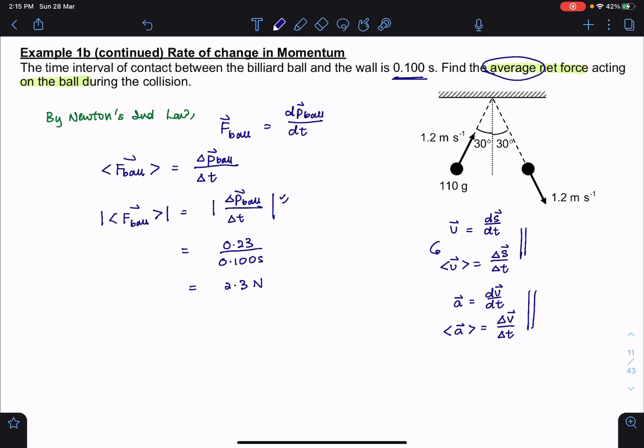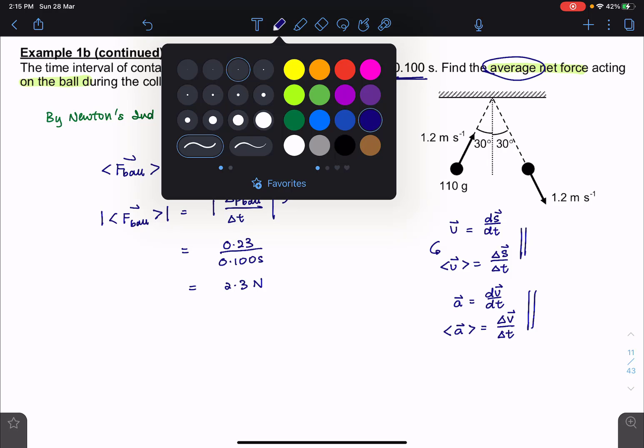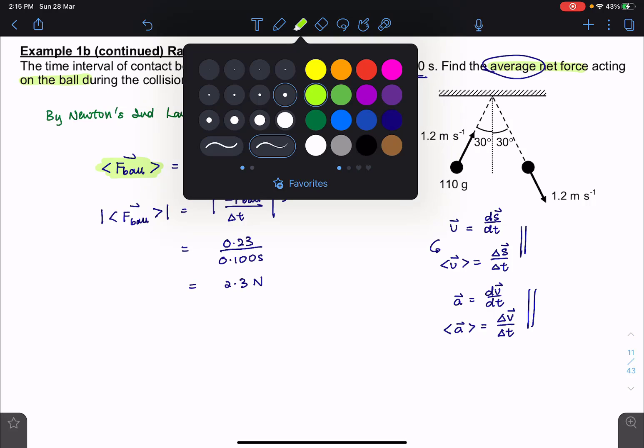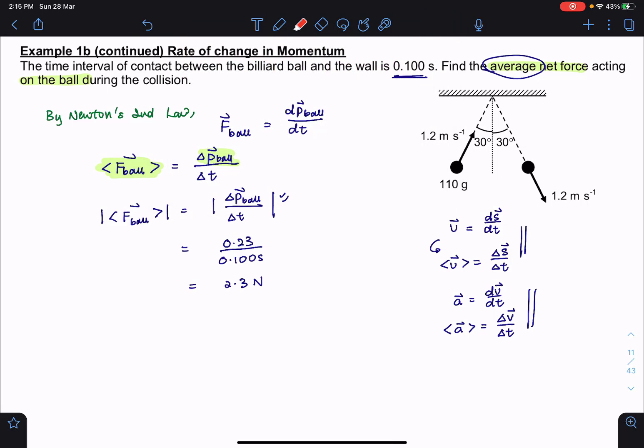But we know that force is actually a vector quantity. So we need to also state the direction of this force. So what's the direction of this force? If you look back at this equation, it will actually tell you what is the direction because the direction is actually determined by the change in momentum of the ball as well. And earlier on in our question, we know that the change in momentum of the ball is vertically downwards. So the direction of the force is actually downwards as well.